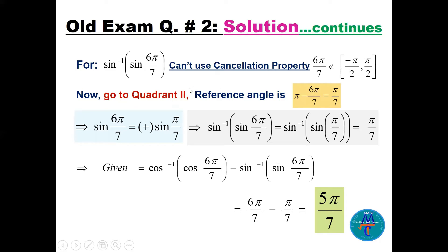Since 6π/7 is in quadrant 2, the reference angle is π minus 6π/7 = π/7. Sine is positive in quadrant 2, so sine(6π/7) = sine(π/7). Now we can apply the cancellation property: sine inverse of sine(π/7) = π/7. So the final answer is 6π/7 minus π/7 = 5π/7.